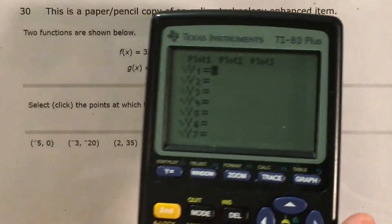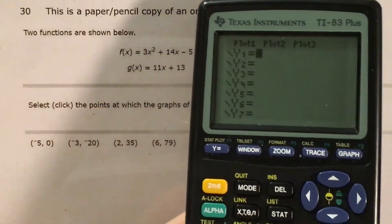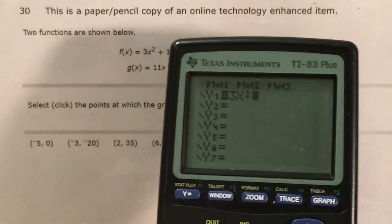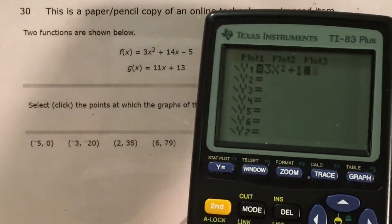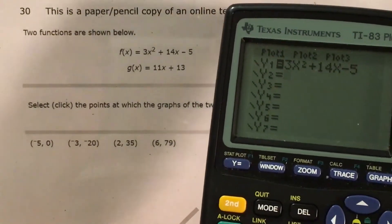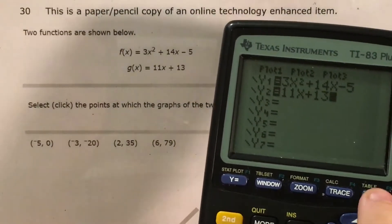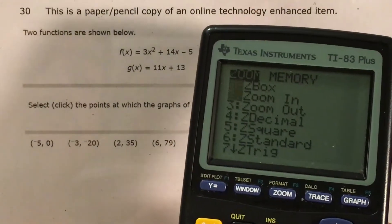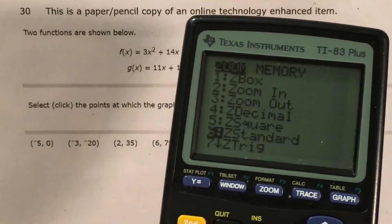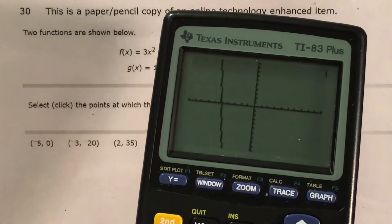So I'm going to pull up my calculator, and I'm going to plug in this as my y1 and this as my y2, so 3x squared plus 14x minus 5. And then my second function, 11x plus 13. Now, I'm going to press zoom and make sure that I'm at the regular window dimensions by going to Z standard.